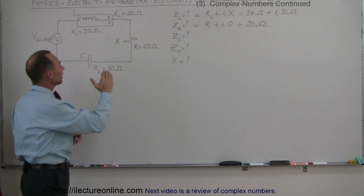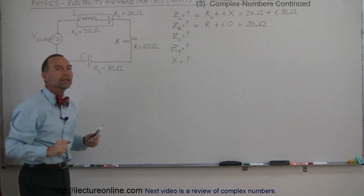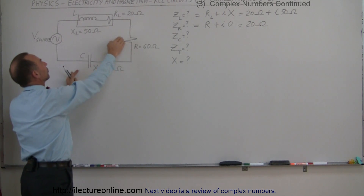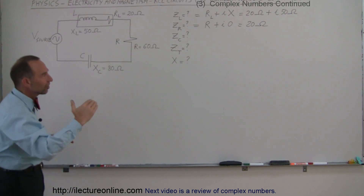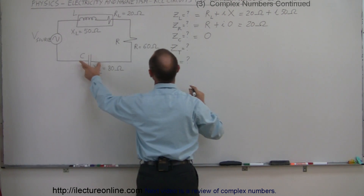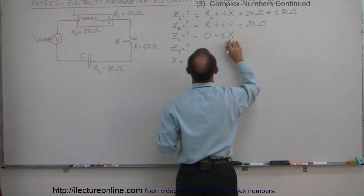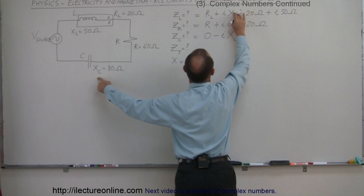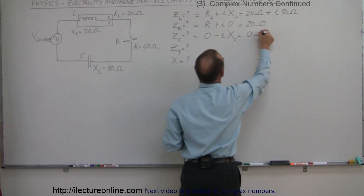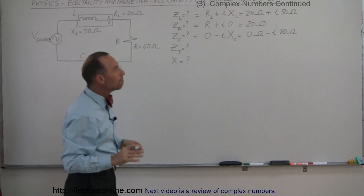For the capacitor, it will lag because the capacitor can absorb quite a bit of current before it begins to fill up with charge and oppose current flow. So the voltage drop across the capacitor happens after the voltage drop across the resistor and the inductor — it actually lags, and therefore we have a negative imaginary part. This will be equal to zero for the real part, because it has no resistance associated with it, minus i times the reactance of the capacitor X sub C, which is 80 ohms. So it's zero ohms minus 80i.